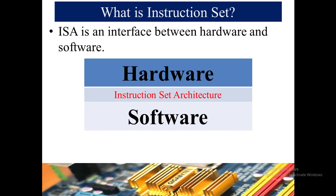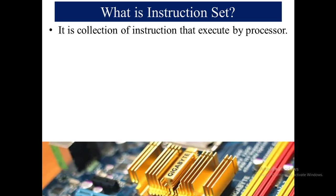ISA makes the hardware perform tasks and processes according to the software instructions. All operations that hardware performs are basically the output of software instructions. If ISA were not present between hardware and software, then hardware and software would be unable to communicate. It is the main feature of a computer system that makes hardware compatible with software.